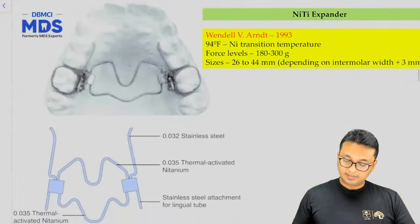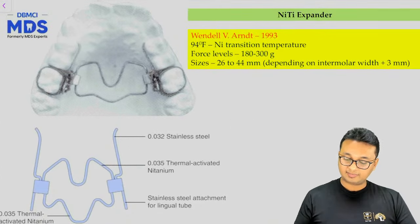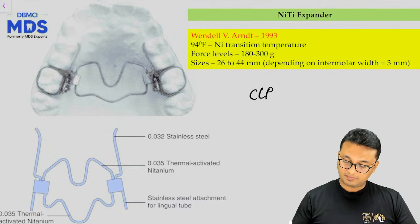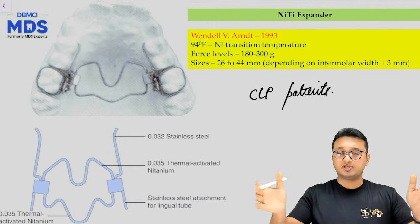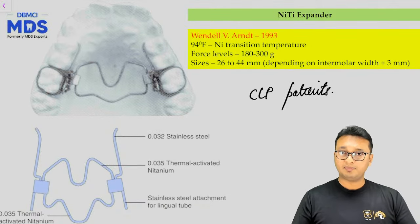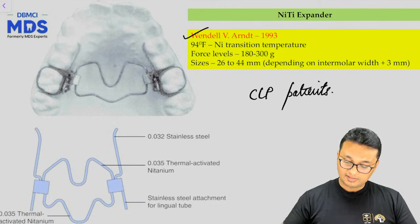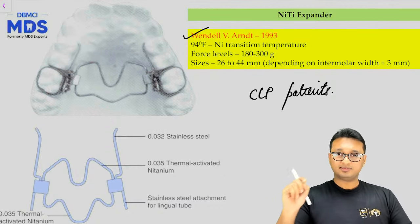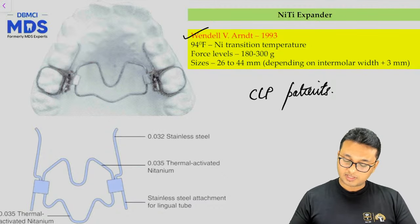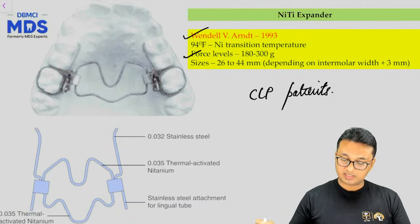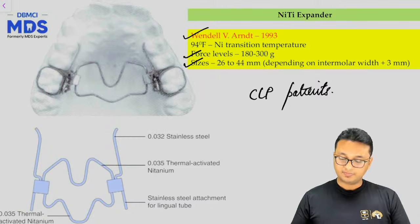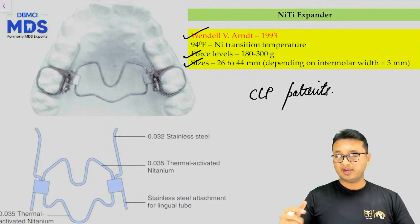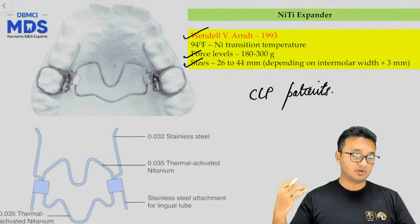The NiTi expander is most specifically used in cleft lip and palate patients for effective skeletal expansion of the maxilla. It was developed by Wendell V. in 1993 and is made up of nickel titanium plus some copper. The force for expansion is around 180 to 300 grams, and it comes in sizes from 26 to 44 mm depending on intermolar width plus 3 mm. It is marketed by companies like OMCO and American Orthodontics.